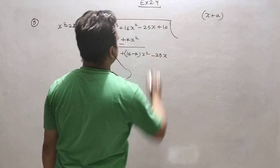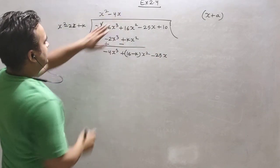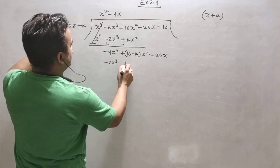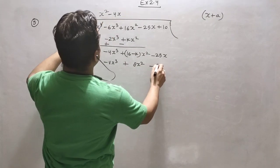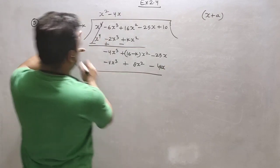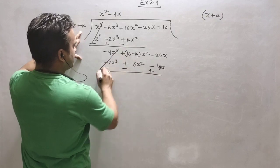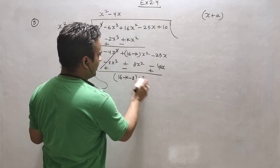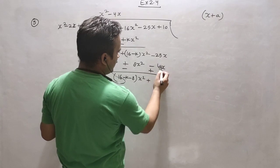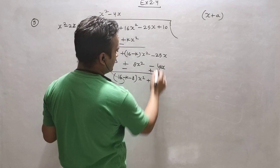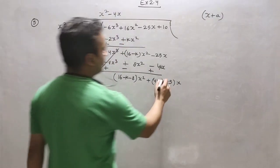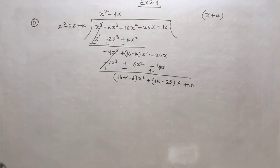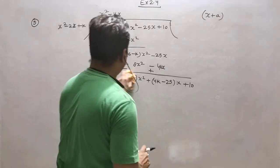Now it is 25x. We multiply by minus 4x to make minus 4x cubed, and it will be minus minus plus 8x squared and minus 4kx. So it is plus it is minus it is plus. Now 16 minus k minus 8 — because minus is with 8 — and plus term is 4k, and minus 25. What is left is 10. Now we can write 8 minus k.